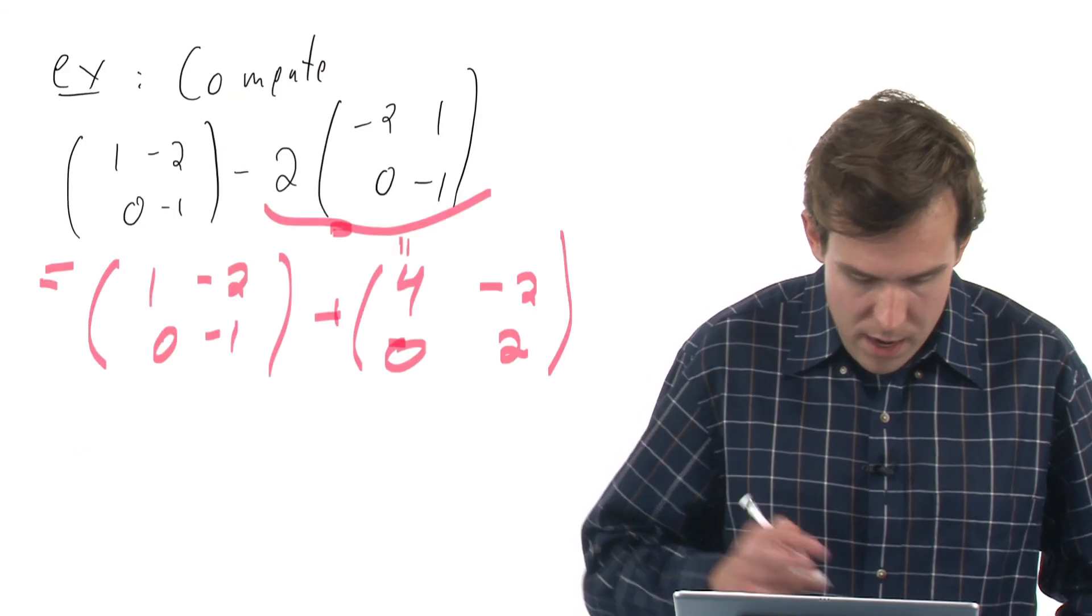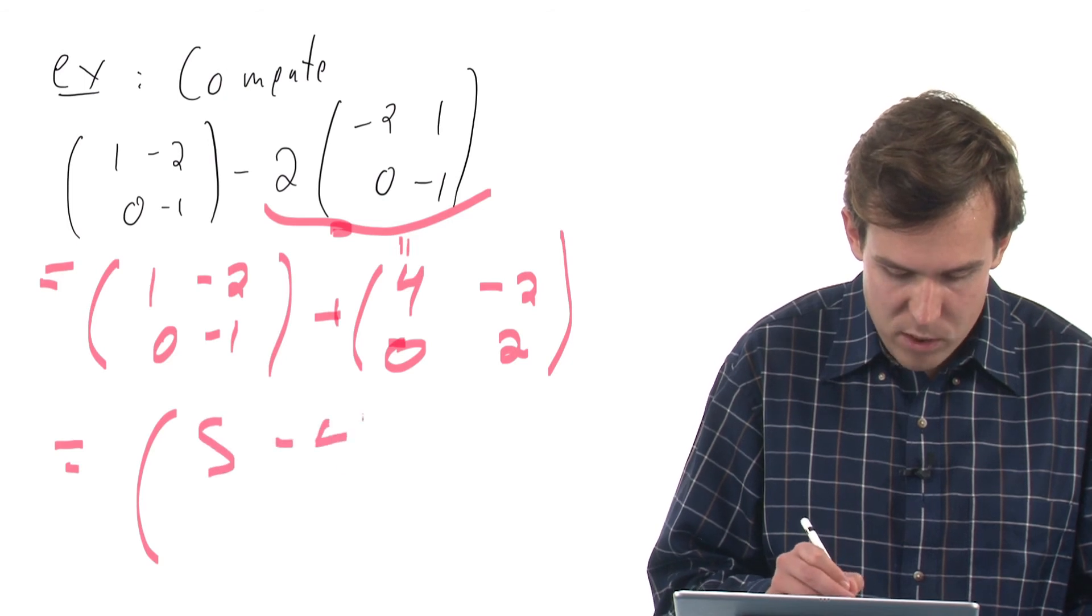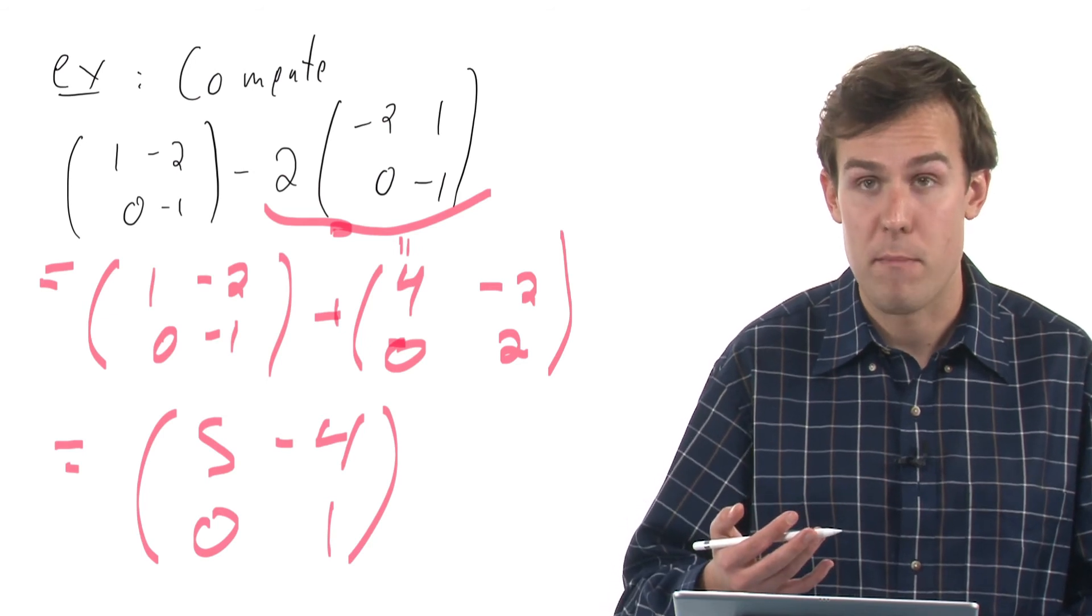And now I will add the matrices. I get (5, -4, 0, 1) by adding each component of the matrices.